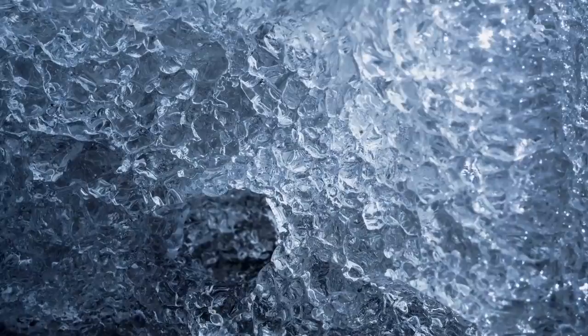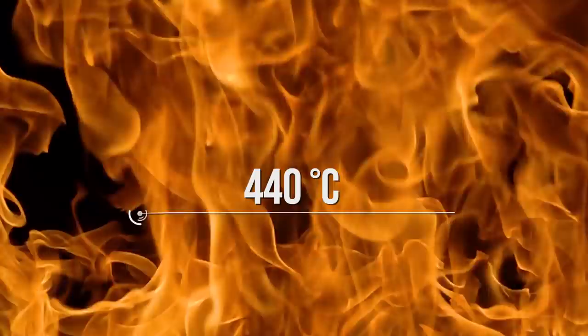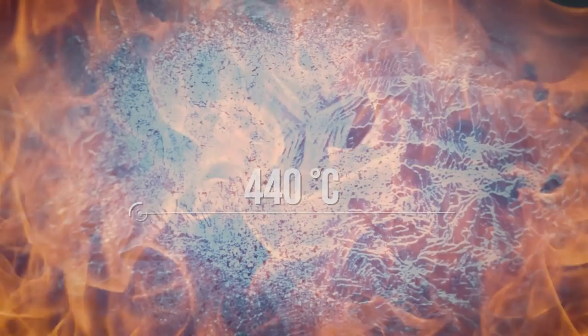However, the ice on the surface of Gliese 436 b is not normal ice like we have on Earth. The temperature on this planet is almost up to 440 degrees Celsius, which is equal to the temperature of normal fire comparatively. Under this temperature, it is possible for water to turn into ice or freeze. But this is where our knowledge takes a sleek twist.